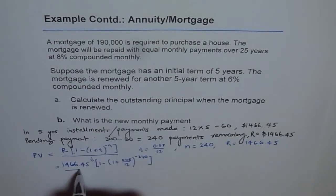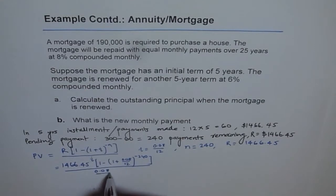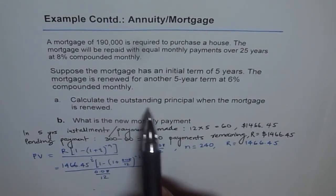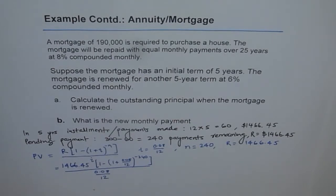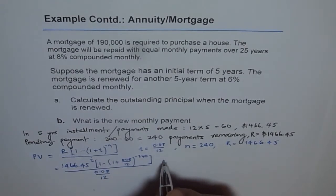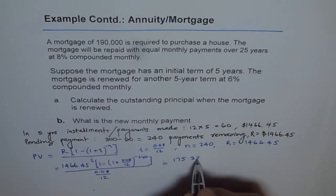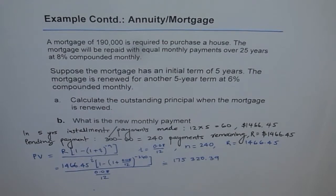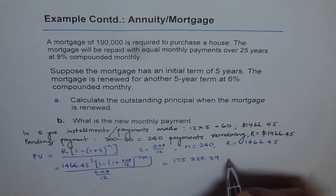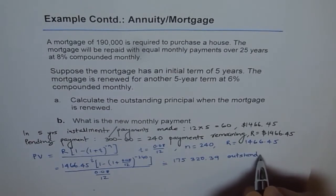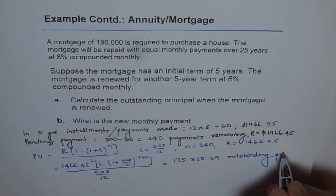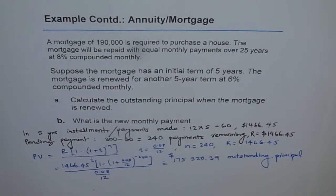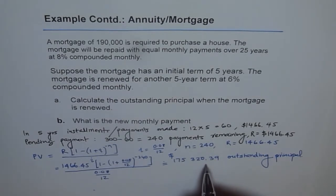Dividing by 0.08/12, that gives us the present value — the outstanding principal when the mortgage is renewed after 5 years of payments. Using a calculator, the answer is $175,320.39. So that is your outstanding principal — that is Part A.